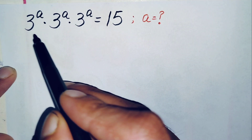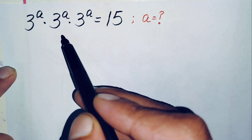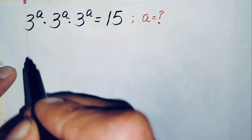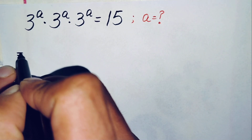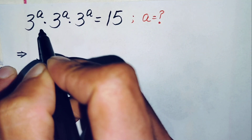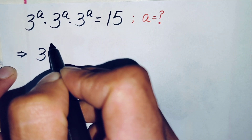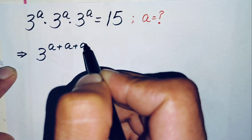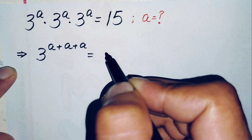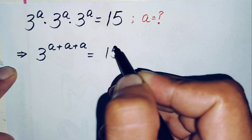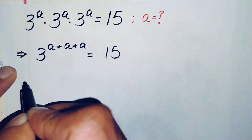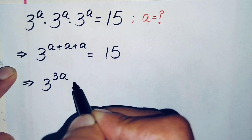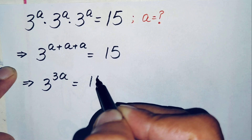Here on the left-hand side the same number is multiplied three times. Since the base is the same, we will add their powers. So this will become 3 raised to power a plus a plus a, which equals 15. Adding a three times gives us 3 raised to power 3a, which is equal to 15.